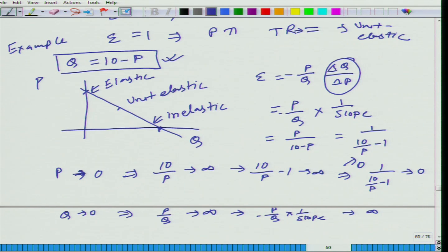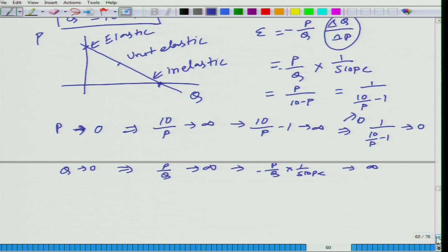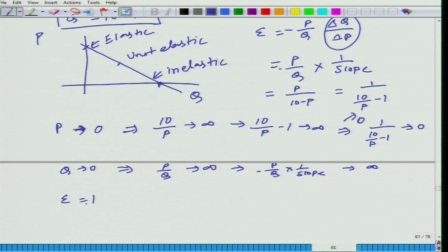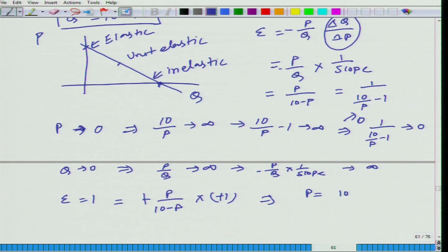What is that point where elasticity equals 1? We set epsilon equal to 1, so minus P divided by (10 minus P) times minus 1 equals 1, which gives P equals 10 minus P, so 2P equals 10, therefore P equals 5. That is the unit elastic point.